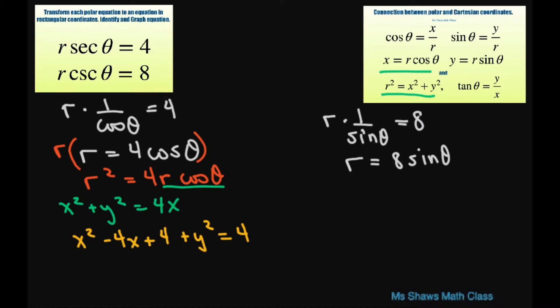Alright, now let's condense our perfect square trinomial as x minus 2 squared plus y squared equals 4. This gives me center 2 comma 0 and your radius equals 2.